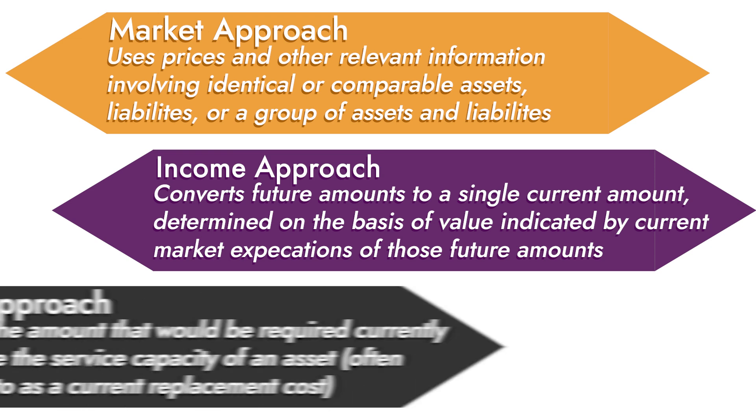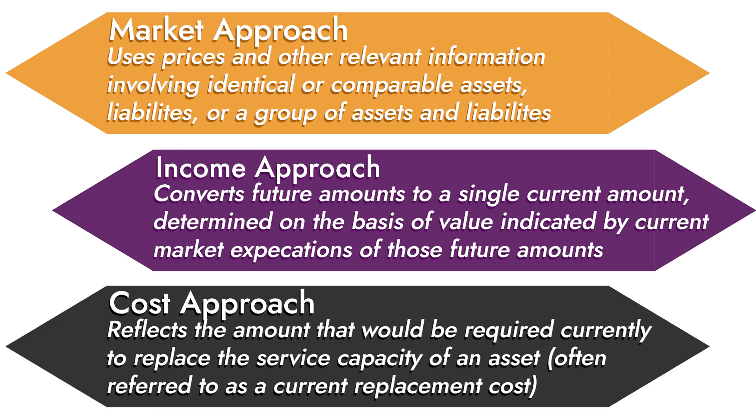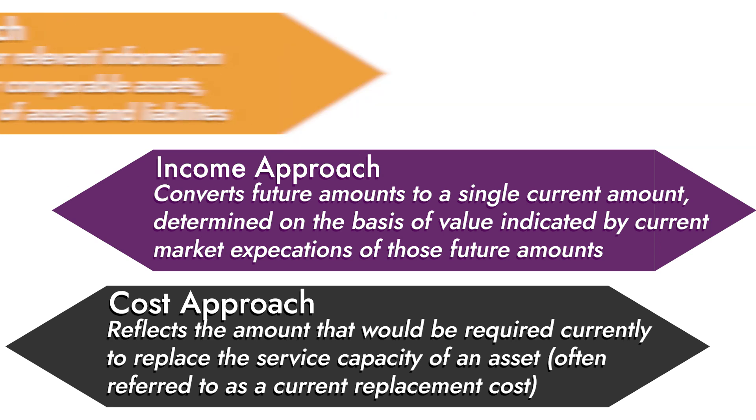And then you've got a cost approach. You won't see it as much, but maybe for something like PP&E where you're looking to replace the asset at its current service capacity, you might use that. So, three different approaches to determine fair value. Another key piece of ASC 820 is the disclosure piece, and if you've ever heard anything about fair value, it's probably the hierarchy table in the footnotes.